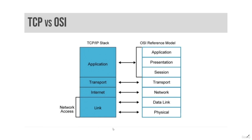The internet layer of the TCP/IP model aligns with layer 3, or the network layer of the OSI model. This is where IP addresses and routing live. When data is transmitted from a node on one LAN to a node on a different LAN, the internet layer is used. IP version 4, IP version 6, ICMP, and routing protocols, among others, are internet layer TCP/IP protocols.